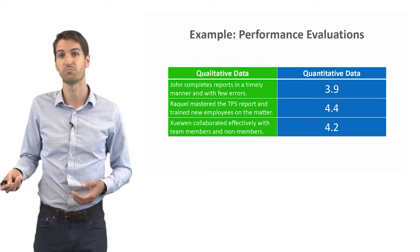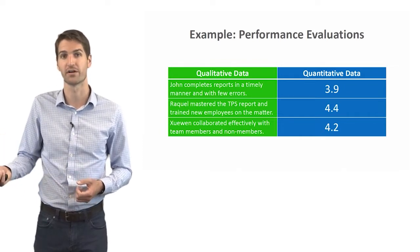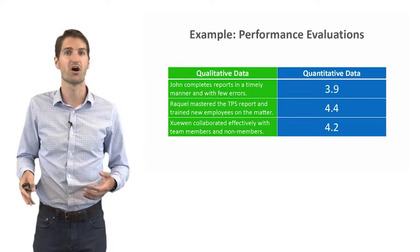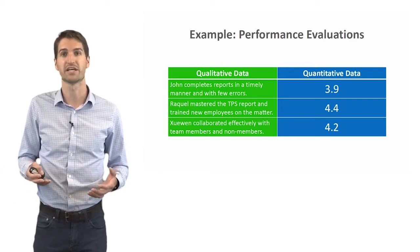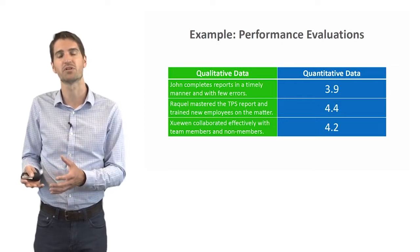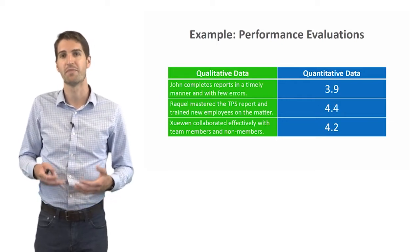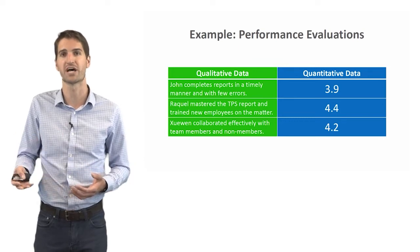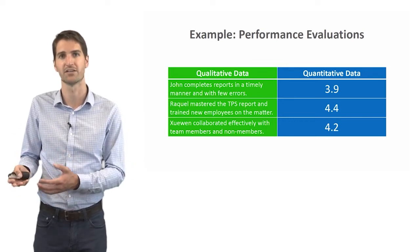Quantitative data, on the other hand, would be their actual numeric score here. So we can see in the right-hand column there that we have the quantitative data going from 3.9, 4.4, 4.2. This is something that we can apply descriptive statistics, math to, as well as inferential statistics and other types of quantitative techniques to analyze.